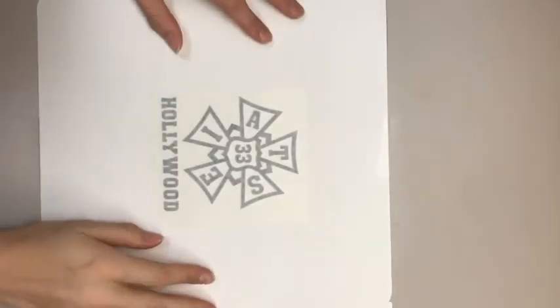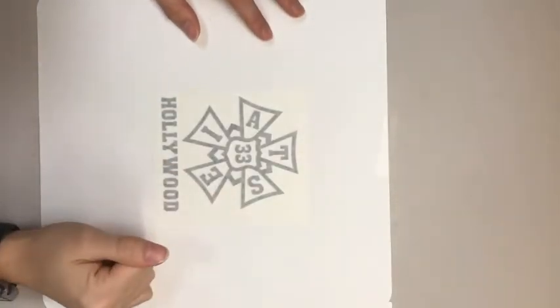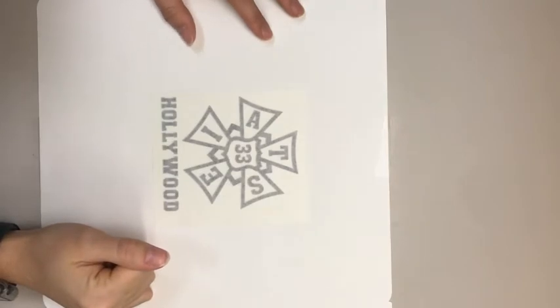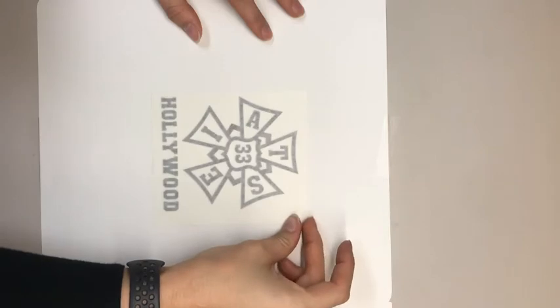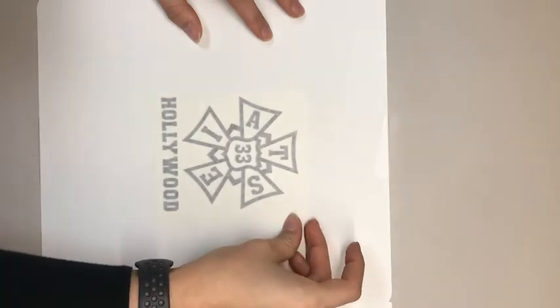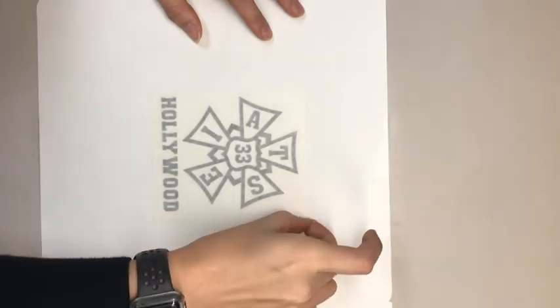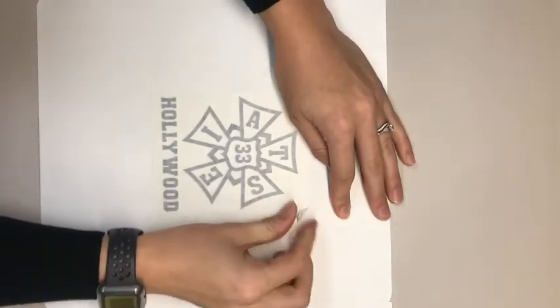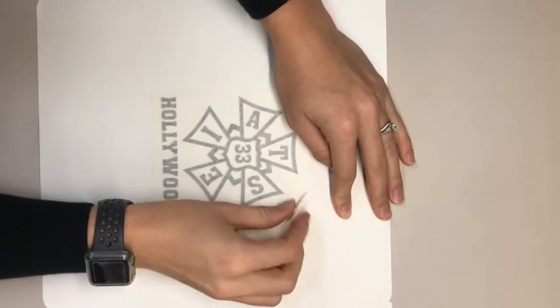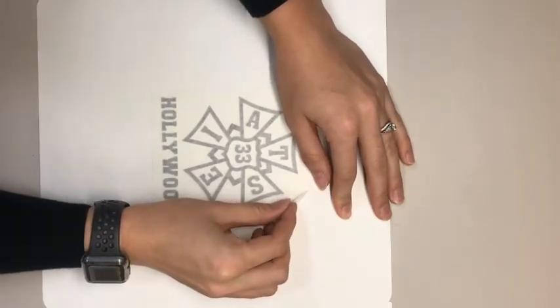All right so once the adhesive is bonded after you waited about 15 minutes you can start removing the pre-mask which is this white kind of sticky material that's left on top. Make sure that when you are squeegeeing it down the first time that you do not remove the pre-mask. Just because when you're squeegeeing it down it will rip or tear your vinyl cut and you just really don't want that to happen.